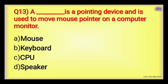Next: Dash is a pointing device — it is used to move the mouse pointer. Which device is this? Options: Mouse, Keyboard, CPU, or Speaker. The right answer is Mouse — a mouse is the pointing device, with which we can move the mouse pointer.